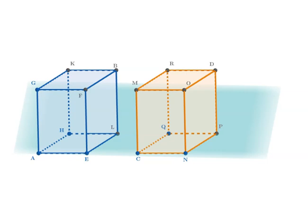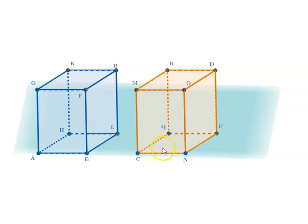There are basically two cases. One is when the legs of the solids are perpendicular to the base, and the other is when they are not perpendicular to the bases. Let us take the first case first.